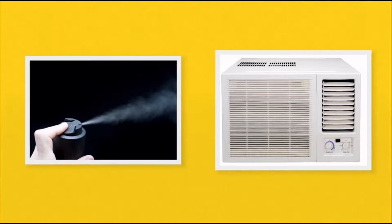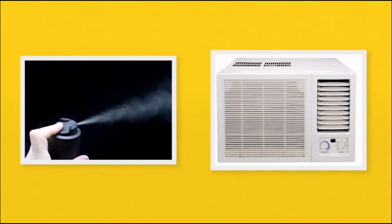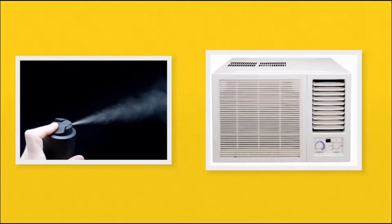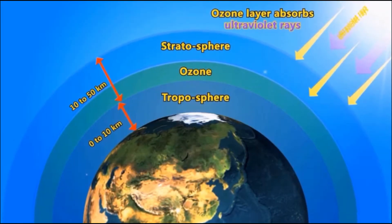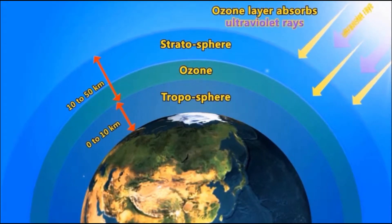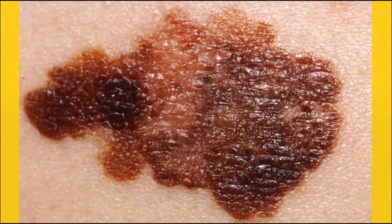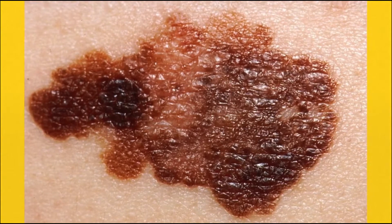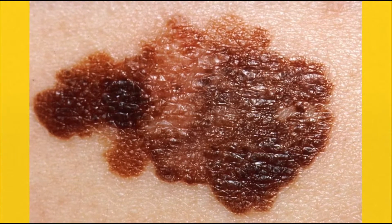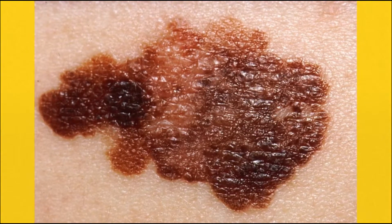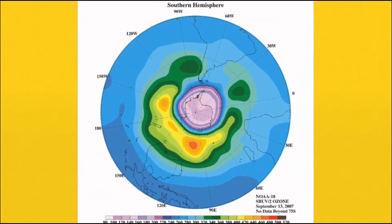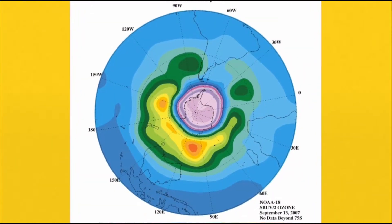CFCs are a man-made chemical found in the propellants in aerosol cans or coolants in air conditioners. It was discovered in 1985 that CFCs were the cause of the destruction of our ozone layer. The ozone layer is a thin layer high up in our atmosphere that protects Earth from ultraviolet radiation. This UV radiation can cause damage to living things, including different types of cancers. Because of this damage to the ozone layer, CFCs were banned worldwide.